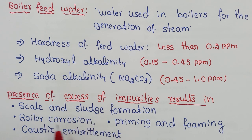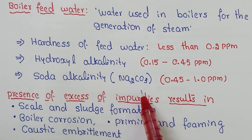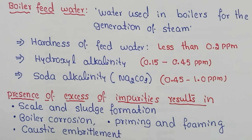Excess impurities cause chemical reactions where metal reacts in the presence of those impurities, leading to boiler corrosion, priming and foaming, and caustic embrittlement — mainly because of dissolved sodium carbonate, which results in the formation of rust. Let us now discuss scale and sludge formation, boiler corrosion, and priming in detail.